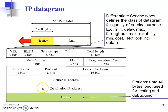The destination IP address helps to identify the destination, and the source IP address identifies the source. The option fields are up to 40 bytes long and are basically used for testing. When the option field is 0, the header length minimum value is 5, giving 5 times 4 equals 20 bytes. When the option field is at maximum, the header length value will be 15, giving 15 times 4 equals 60 bytes.